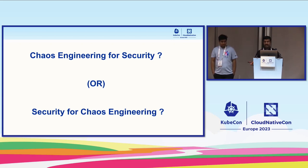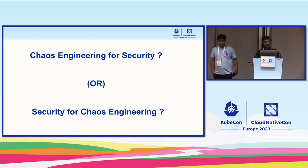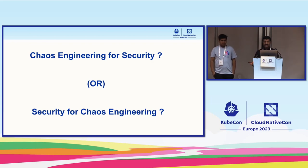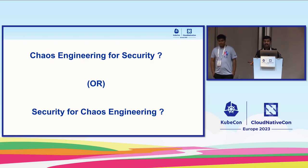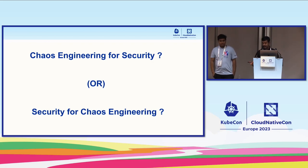Today's topic — there were some questions: are you talking about security chaos engineering, or security for chaos engineering? So I just wanted to make it a bit clear. Chaos engineering for security is about running chaos experiments to assert that there are security weaknesses or there are no security weaknesses. And security for chaos engineering is when you're anyway doing chaos experiments in your environment and you're making sure you're doing it securely. What we are talking about today is the second topic.